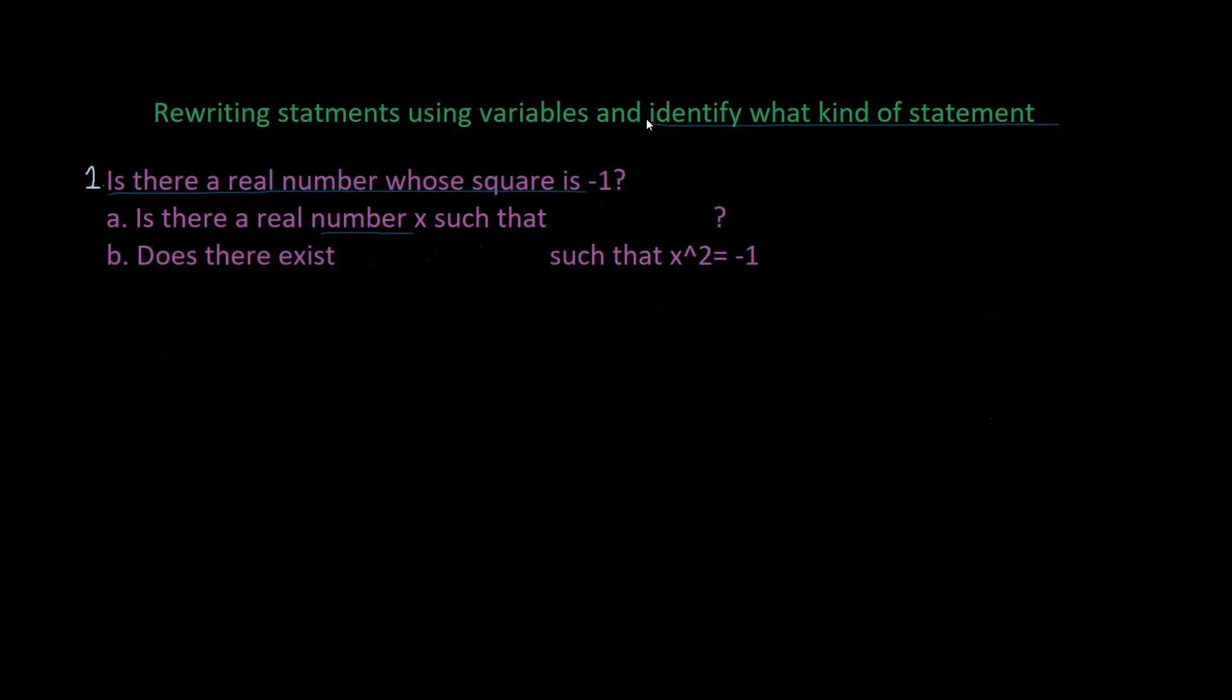Rewriting statements using variables and identify what kind of statement. Is there a real number whose square is negative one? Is there a real number x such that x squared equals negative one? Does there exist a real number such that x squared equals negative one?